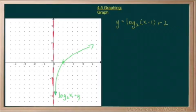Graph y equals log base 2 of x minus 1 plus 2. What I have here on my grid is the asymptote and a rough sketch of y equals log base 2 of x.